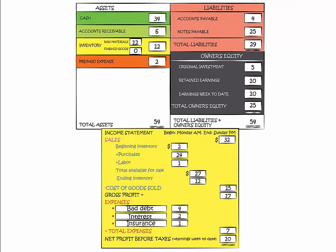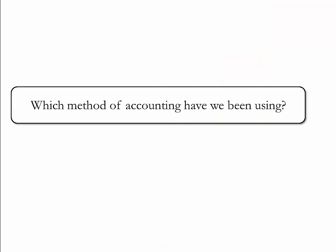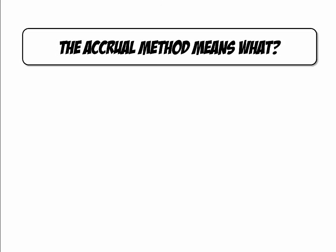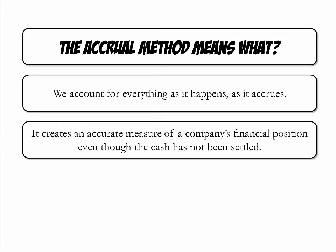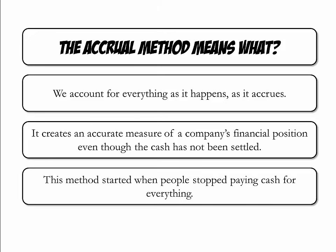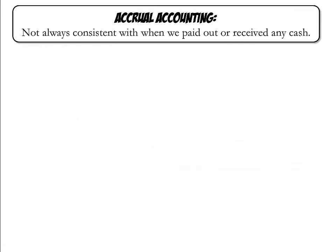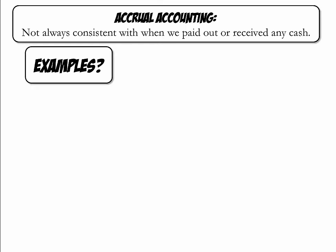When we compare our balance sheet and income statement for Week 2, we can see that our earnings week to date of $10 equal our net profit on the income statement. We also had $12 in inventory under assets on our balance sheet, just like our ending inventory on the income statement. The accounting method we have been using is called the accrual method. It means that we account for everything as it happens, as it accrues. The advantage of the accrual method is that it creates an accurate measure of the company's financial position, independent of whether or not the cash has settled. This method became prominent when people stopped paying cash for everything. It is important to understand that the accrual method is not always consistent with when one pays a bill or receives cash.